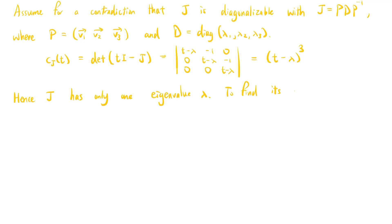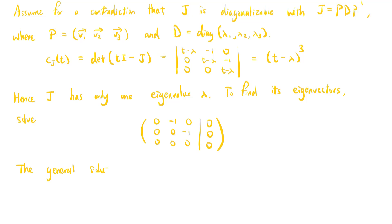To find its eigenvectors, solve the system (λI minus J)v = 0, which gives the augmented matrix with rows [0, negative 1, 0 | 0], [0, 0, negative 1 | 0], [0, 0, 0 | 0]. The first row shows that the second variable is 0, and the second row shows that the third variable is 0. So the general solution is (a, 0, 0) where a is a real number.